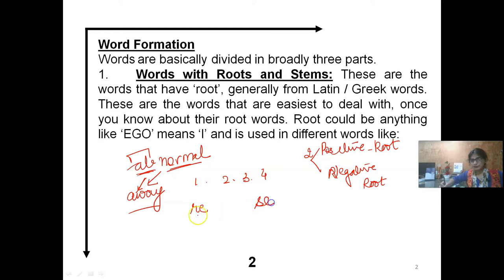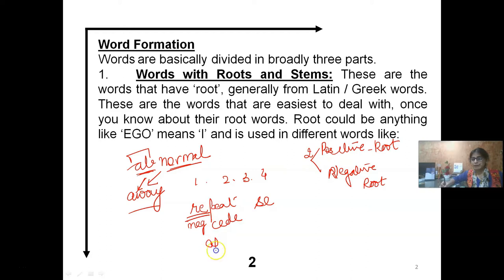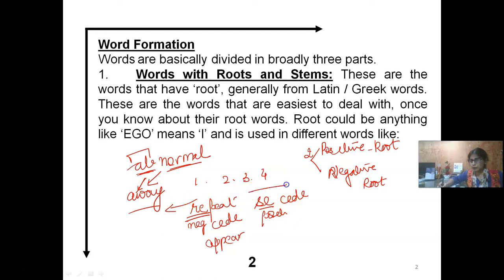Take two more examples: RE and PRO (or C). RE — any word which starts with RE means to go back, to repeat, to do again (dubara se). RE-SEED means to go back. PRO or C is a positive root meaning to go forward (aage jana). So RE is a negative root — going back — and C/PRO is a positive root — going ahead.